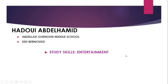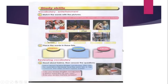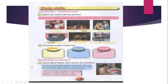The textbook is Focus. Study skills — the focus is on vocabulary entertainment. We are going to learn some vocab matching, then categorize the words according to their categories: cinema, theatre, and circus. At the end, we are going to learn how to review vocabulary.